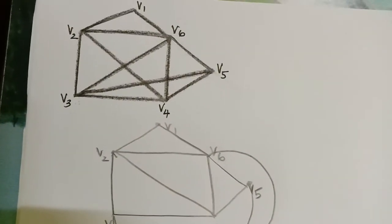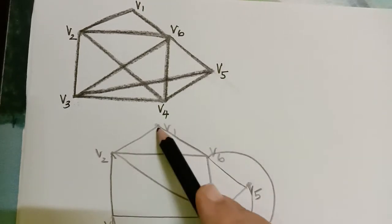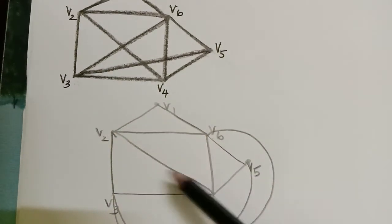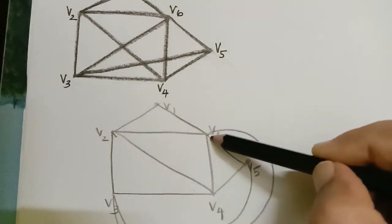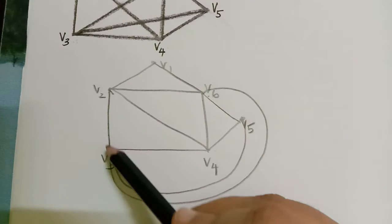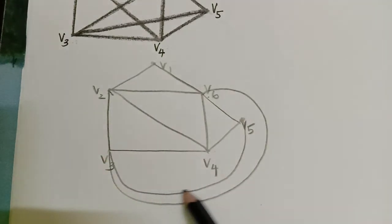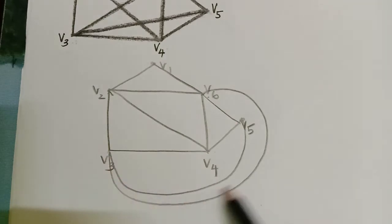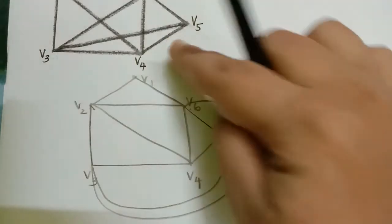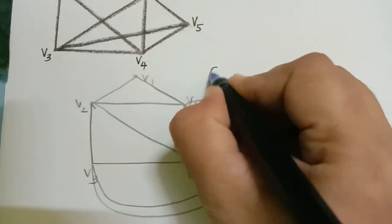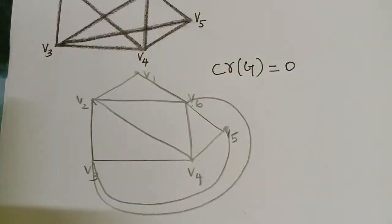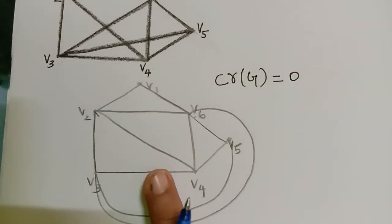Now if we check, all the edges are there: V1 to V2, V1-V6, V2 to V4, V2-V3, V6-V4. The edge V3 to V5 comes here, and the edge V3 to V6 comes in this way so that there are no crossings. We have drawn this graph in a plane such that the number of crossings has become zero for this particular graph.